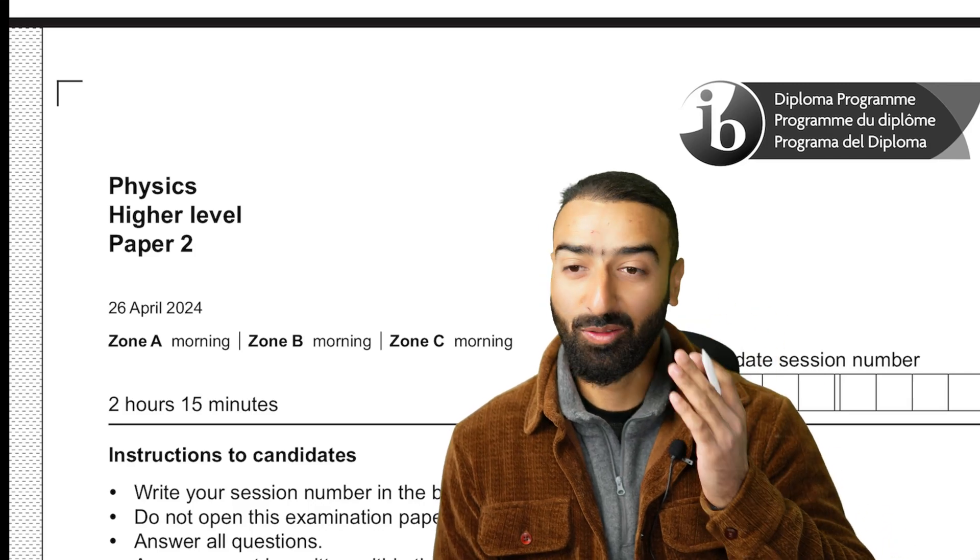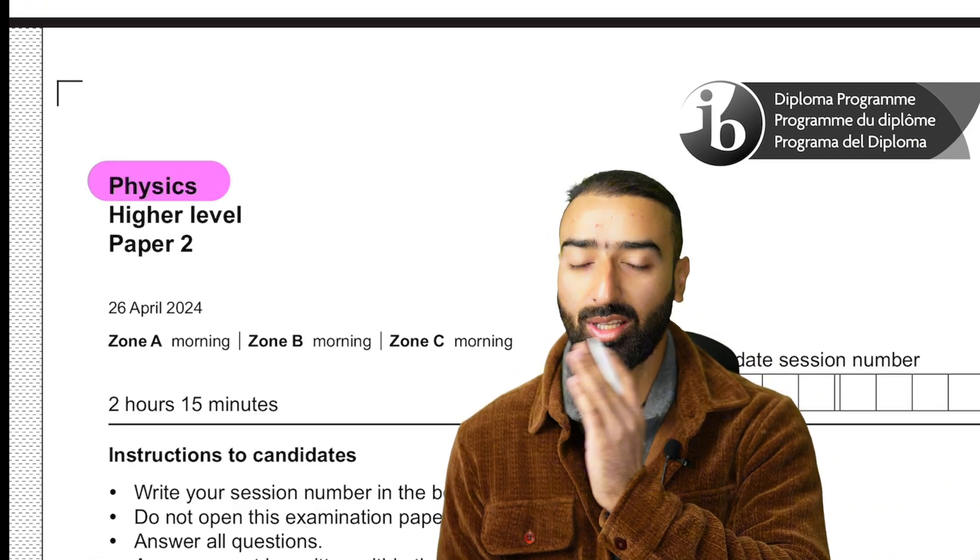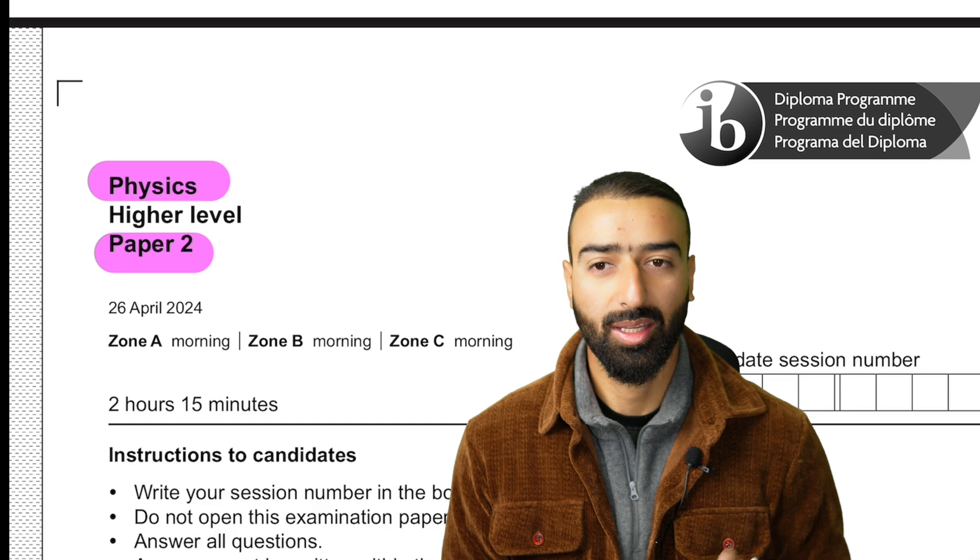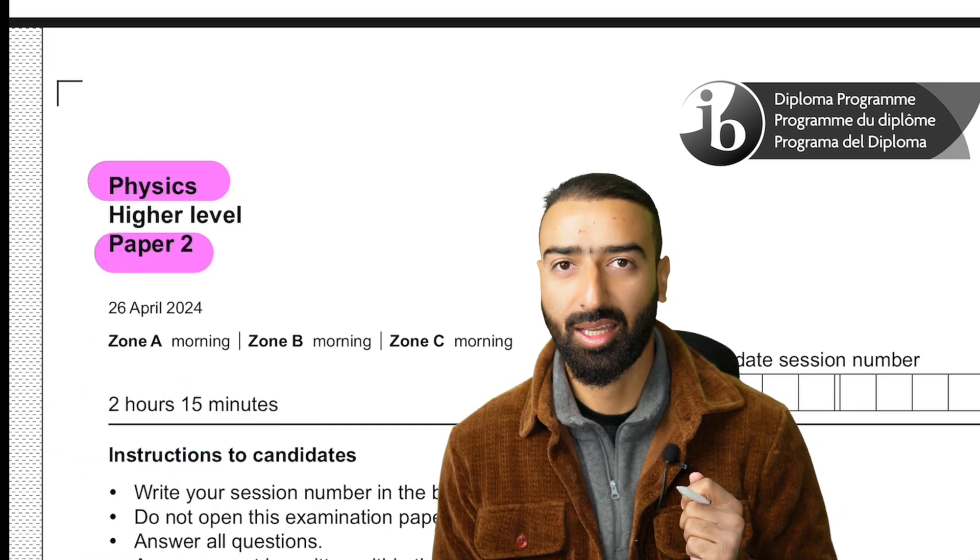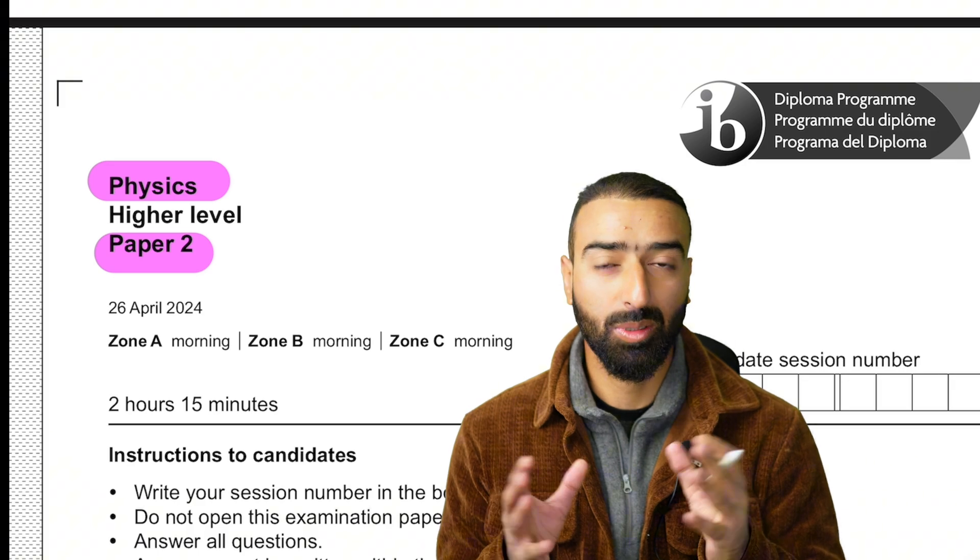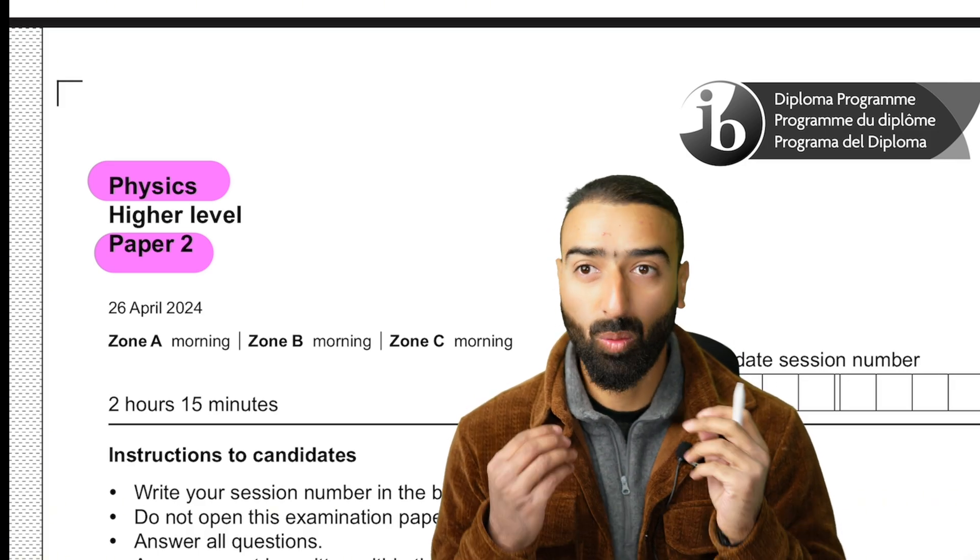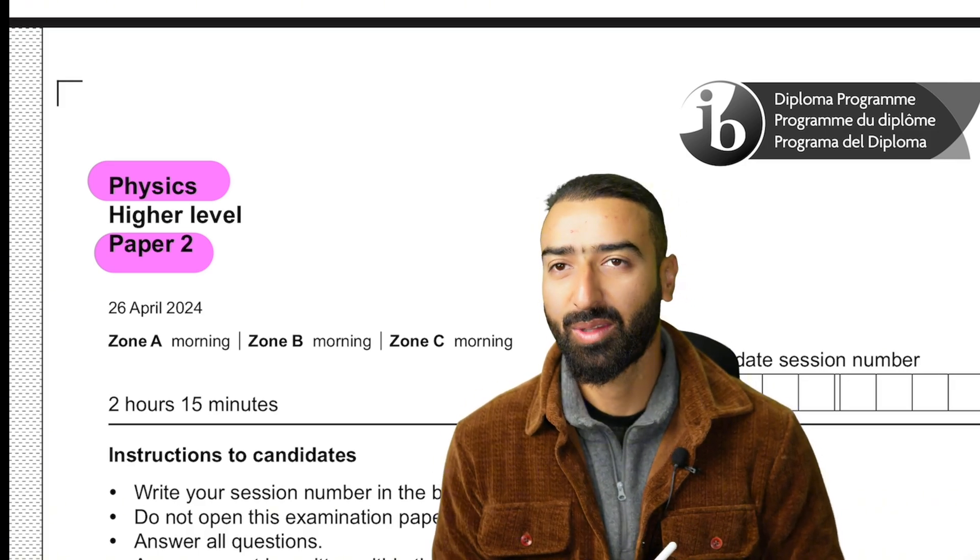Hello IB students, today we'll be solving the Physics HL Paper 2, 2024. We'll be looking at the seventh question that appeared on this exam. I will give a detailed explanation of all the concepts required to solve that particular problem. So let's get started.